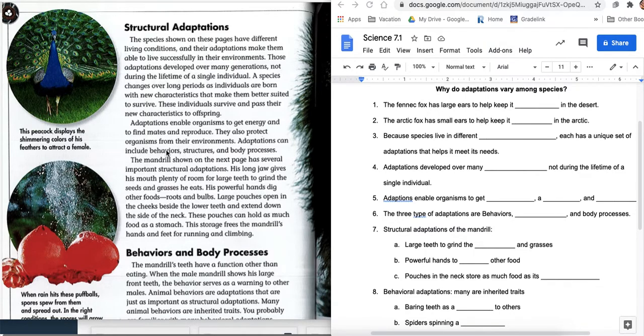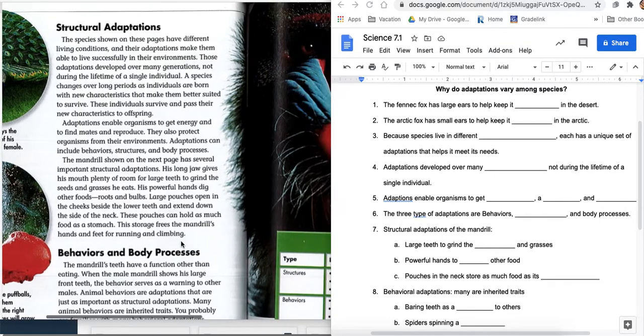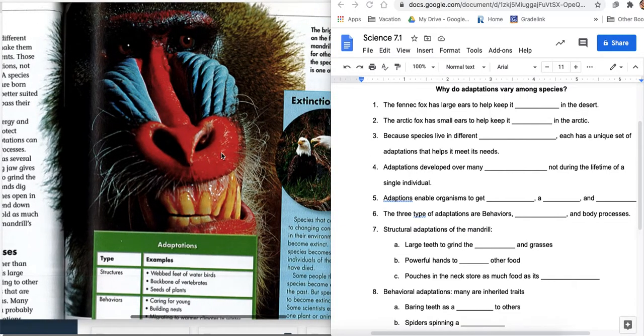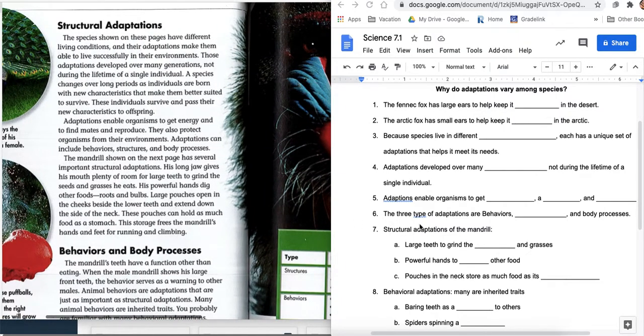Adaptations include three types of adaptations. One, behavior. Two, structure. And three, body process. We're going to talk right here about the structural adaptations. The mandrel shown on the next page has several important structural adaptations. His long jaw gives his mouth plenty of room for large teeth. What do we use those huge teeth for? To grind the seeds and grasses that he eats. Letter A. His powerful hands dig up other food, letter B, like roots and bulbs.